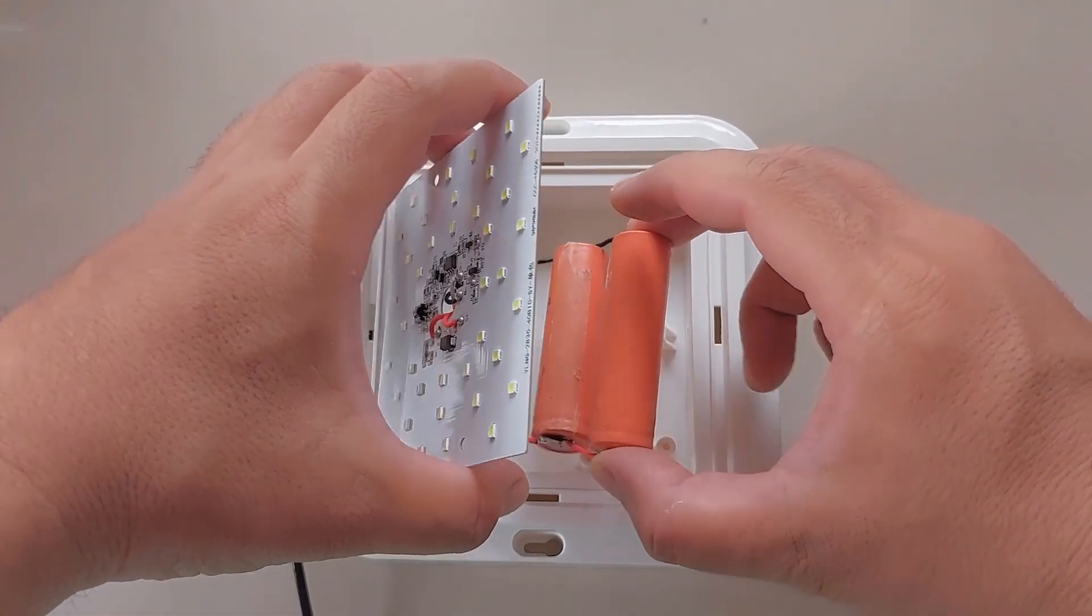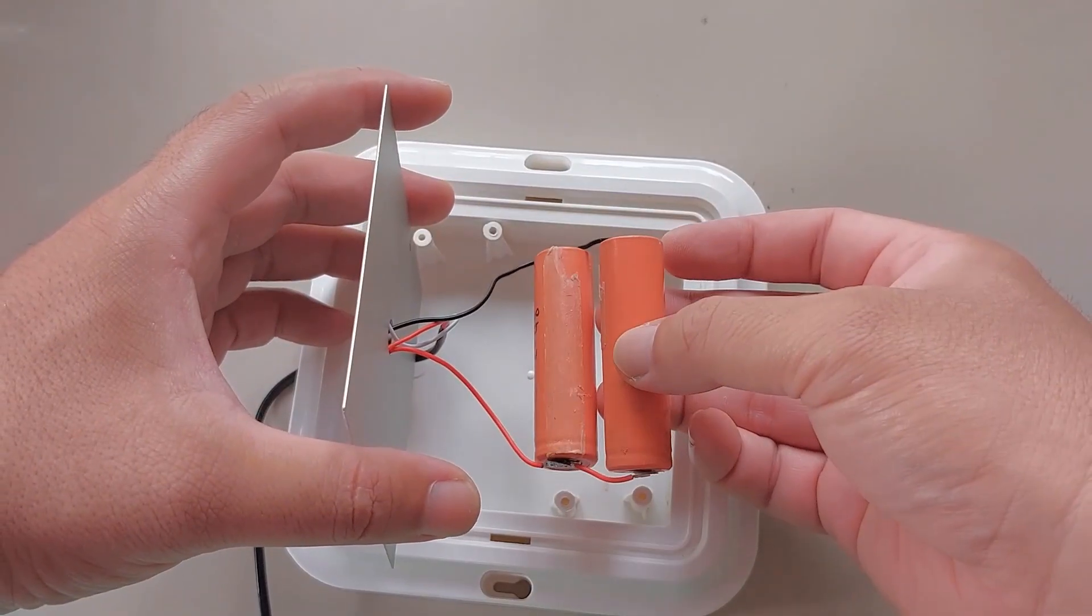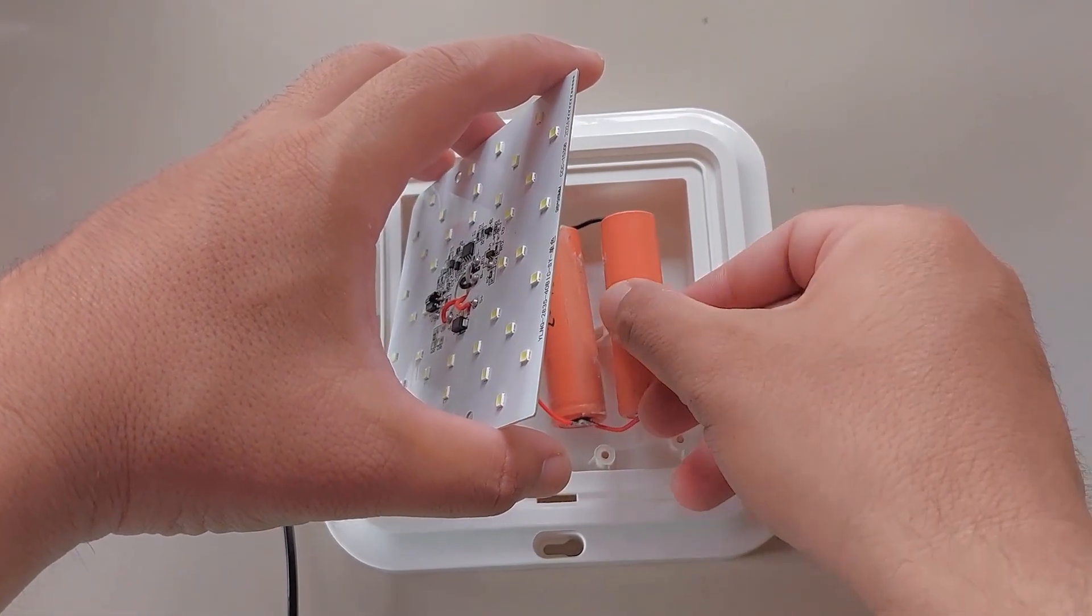This means the solar panel that can only provide 300mAh cannot fully charge both batteries in one day. Which is fine since I only use this as an emergency light.